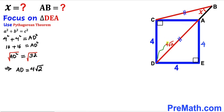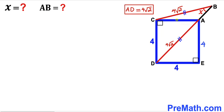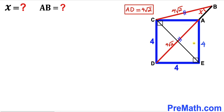Since AD = BC, segment BC is also 4√2 units. In the next step, we connect vertices C and E. CE is the diagonal of the same blue square, so diagonal CE = 4√2 units as well.